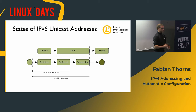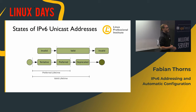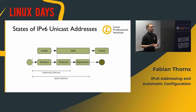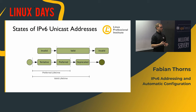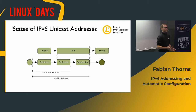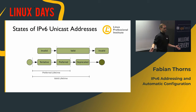Once duplicate address detection succeeds, the address is valid and in the state called preferred. How long this state lasts depends on the preferred lifetime - usually infinite for manually configured addresses, and with a counter running for automatically configured ones. Once the preferred lifetime is over, the address becomes deprecated. It's still there and can still be used for another amount of time determined by the valid lifetime, but if there is another address in the preferred state, that address should be used instead. Once the valid lifetime is over too, the address becomes invalid and can't be used anymore.